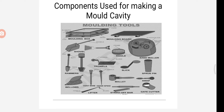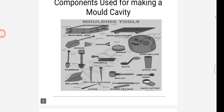Next we can see trowels. It is a metal blade with a wooden handle. It is used to smoothen the surface of the mold and also to repair the damaged portions of the mold. The shape of the blade is usually rectangular and has a round or square end. Next is the slick — it is a double-ended tool used for repairing and finishing small surfaces and round corners of the mold.